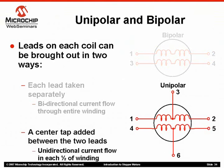The unipolar configuration, on the other hand, only allows current flow in half of the winding at one time. Notice that each winding has a center tap that is brought outside of the motor along with each winding lead.